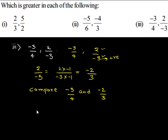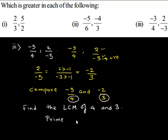So, first let us find the LCM of denominators 4 and 3. LCM can be found out using prime factorization. So, let us see how to do that.